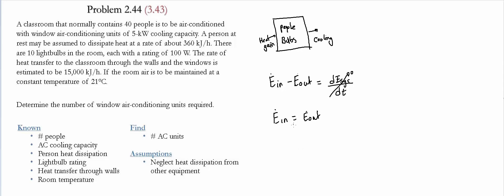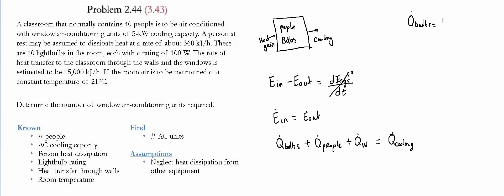The rate of energy in equals the rate given by the bulbs plus the rate given by the people plus the heat gained through the walls. What leaves is the rate of cooling. For the bulbs: there are 10 bulbs, each dissipating at 100 watts, so the total rate is 1 kilowatt.